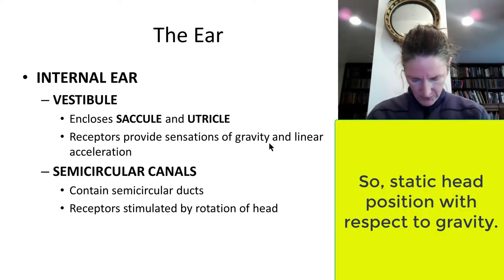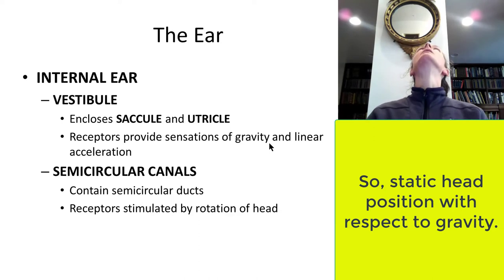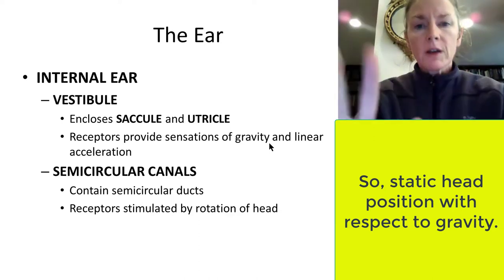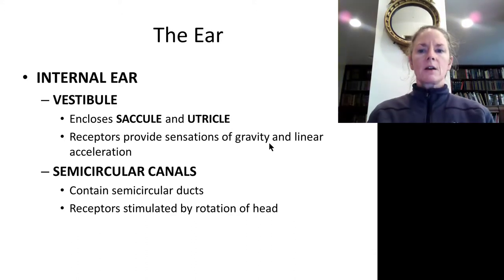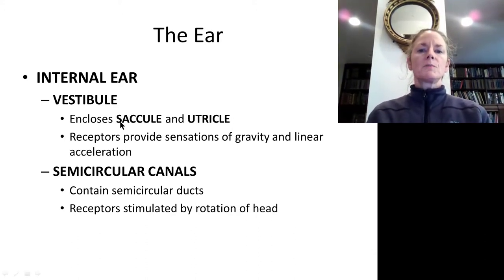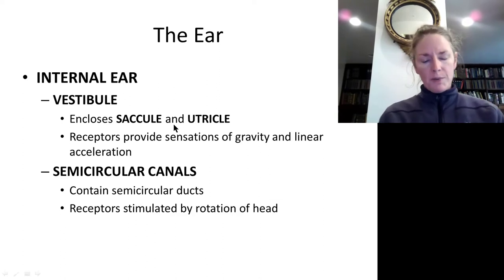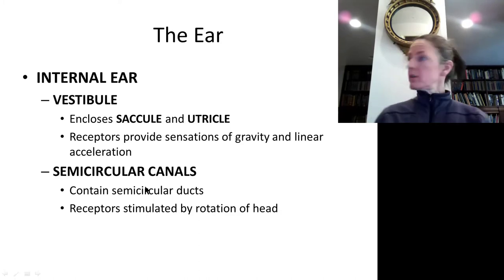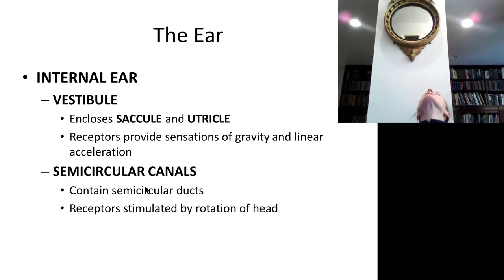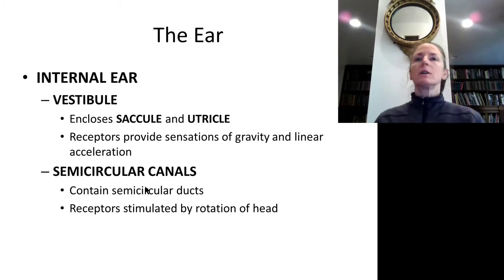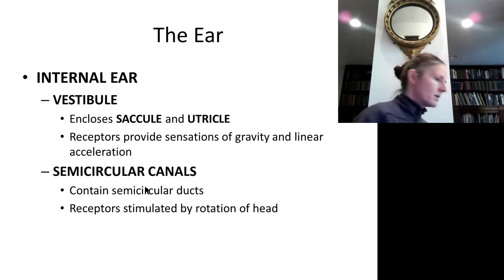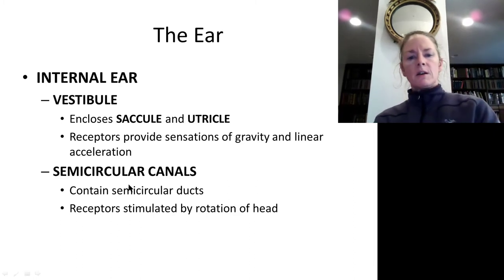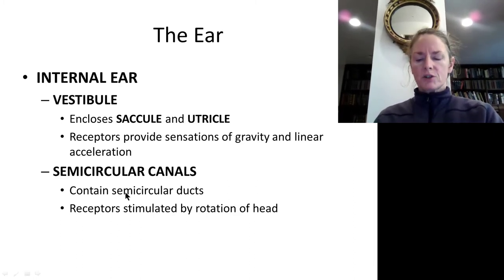If you tilt your head in different directions, or accelerate or brake suddenly in a car, the saccule and utricle are the parts of the ear that will be stimulated. The semicircular canals register rotational movements — so if you do a cartwheel, a flip, or spin around, these are the parts of the ear registering that movement.